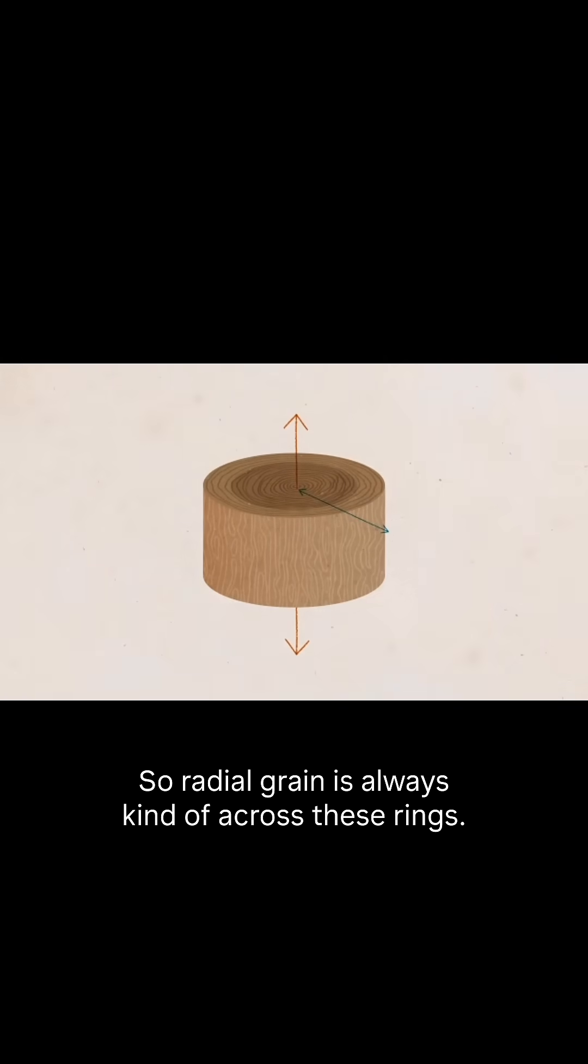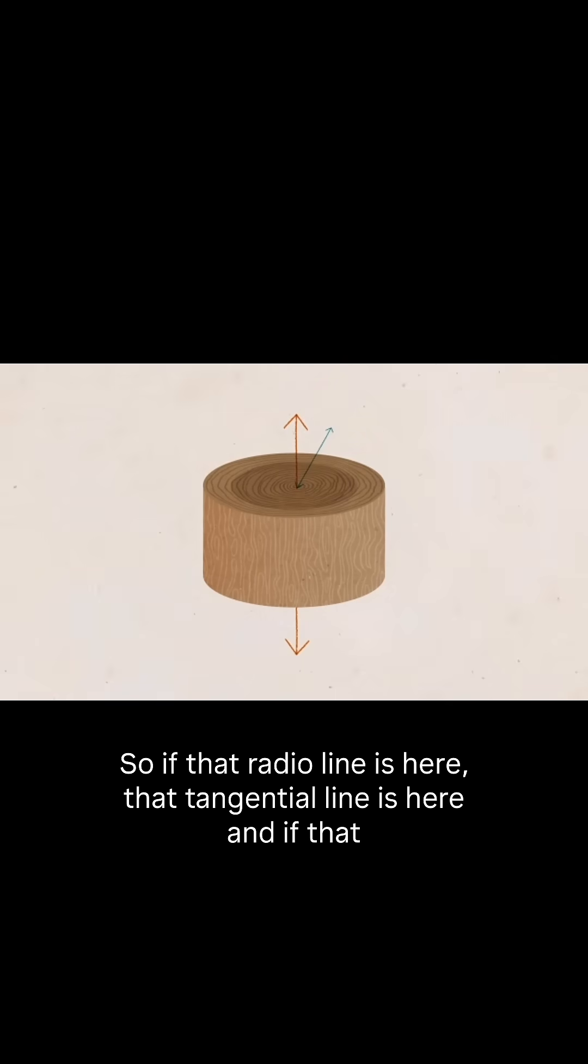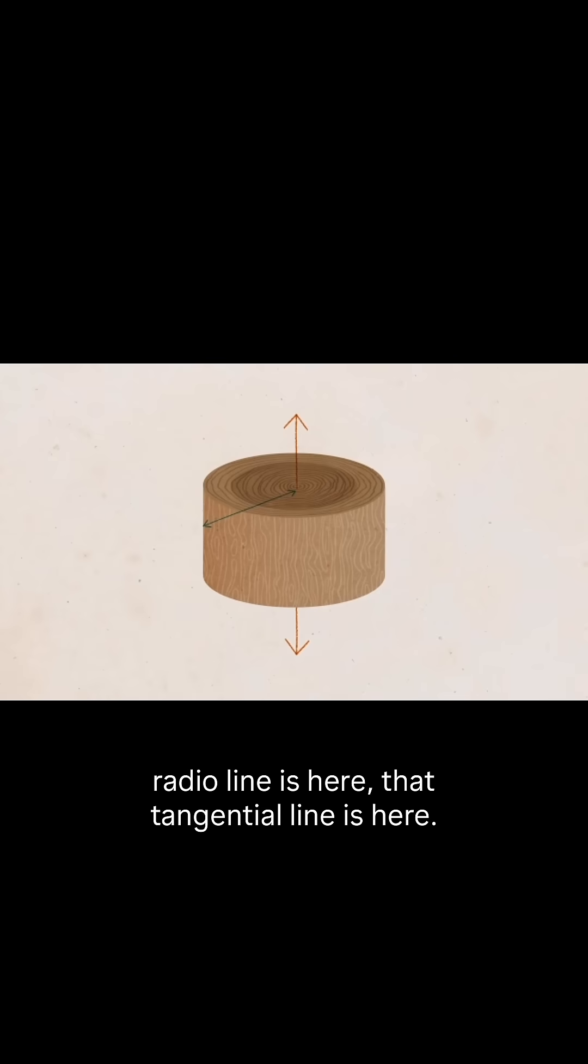So radial grain is always kind of across these rings. But the tangential line is always 90 degrees or perpendicular to that radial line. So if that radial line is here, that tangential line is here. And if that radial line is here, that tangential line is here.